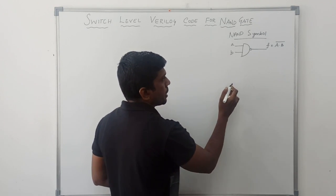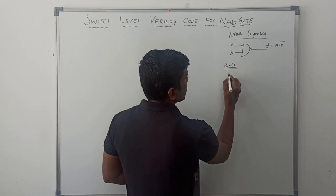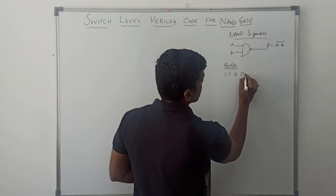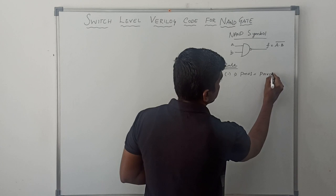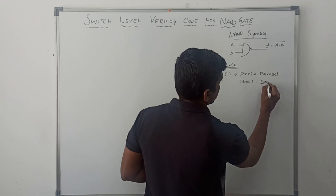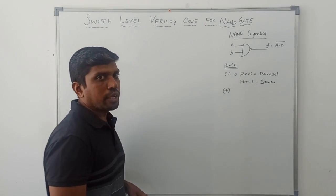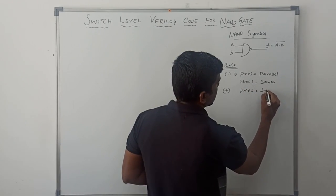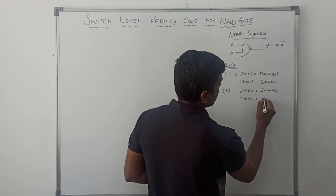Before I draw the transistor level circuit, I just recall the rules. In the Boolean expression, dot operator present means PMOS transistor is connecting parallel, NMOS connecting series. Suppose plus operator present in the Boolean expression, PMOS connecting series, NMOS connecting parallel.